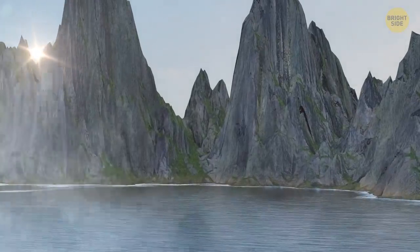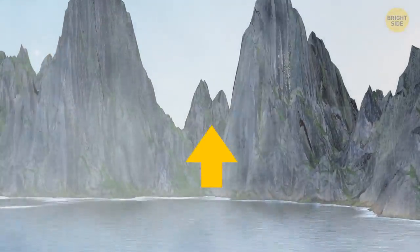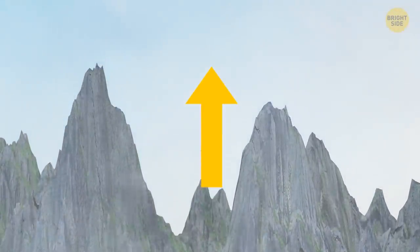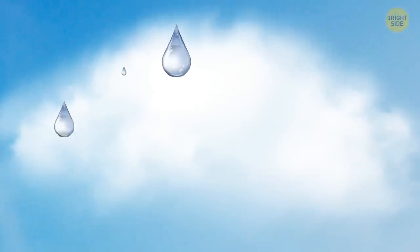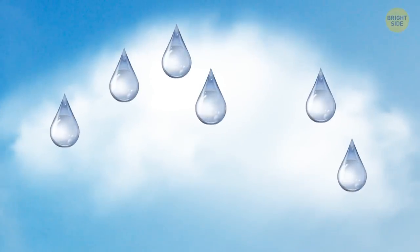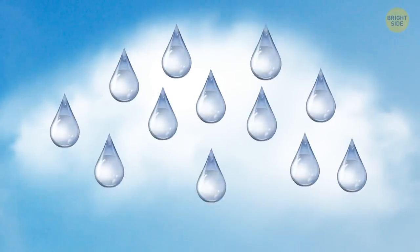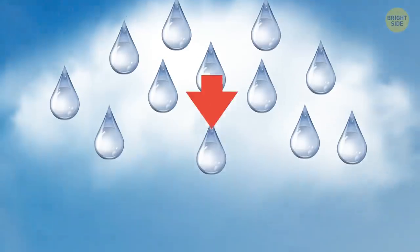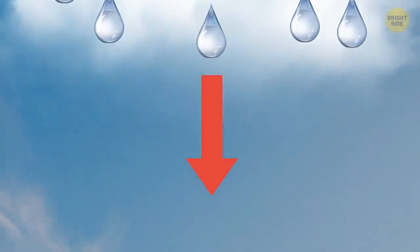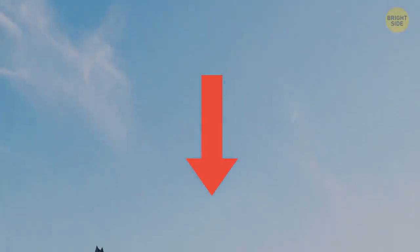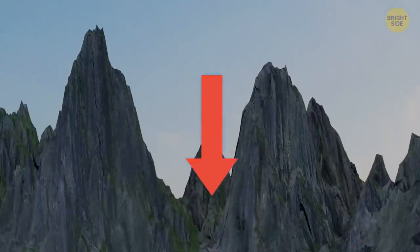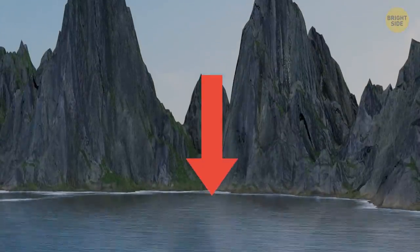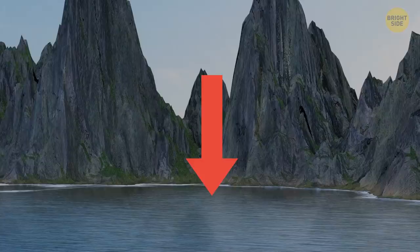It goes like this: water evaporates and rises into the atmosphere in its gas form. There, it cools down and forms into clouds. The bigger and heavier water droplets become, the sooner they fall down to Earth. Cloud seeding helps to speed up these droplets' growth.